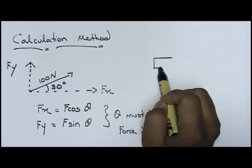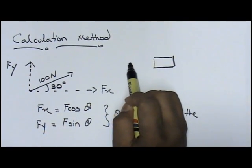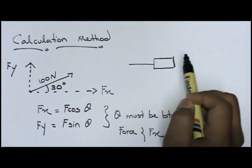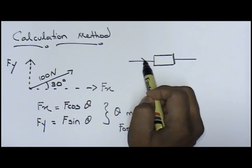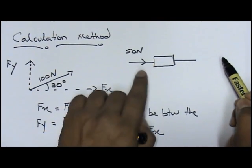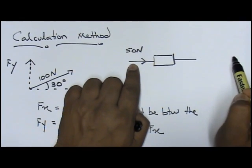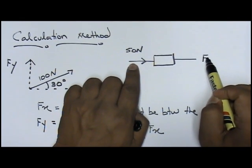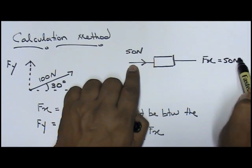I just want you to imagine we have a box. Simple concept. Let's just say you are pushing the box in this direction with a force of 50 newtons. Basically, the box moves in the horizontal line, which you will say Fx equals to 50 newtons. Am I right?